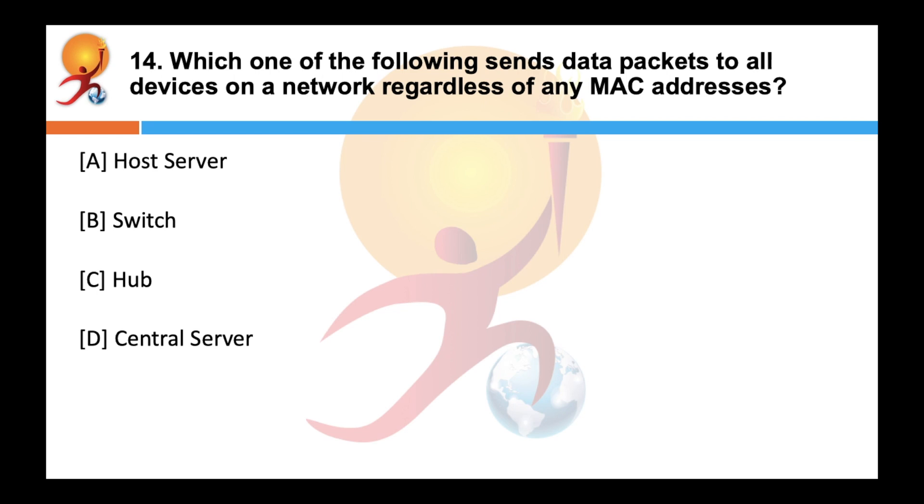Which one of the following sends data packets to all devices on a network regardless of any mac addresses? Correct answer is a hub. As we have already seen it is a hardware device that relays communication data. A hub sends data packets to all devices on a network. The hub allows system administrators to monitor data passing through and to configure each port according to the requirements.